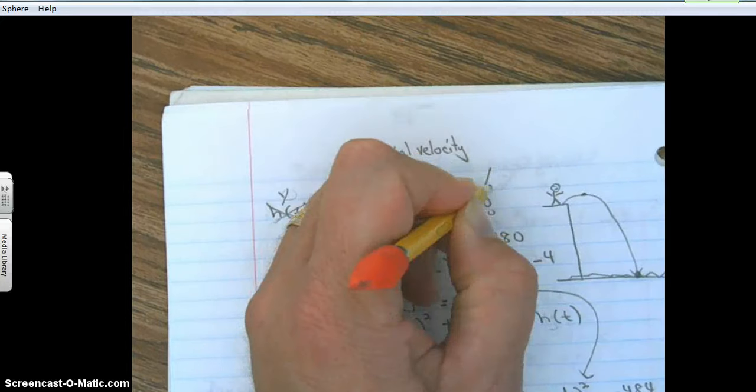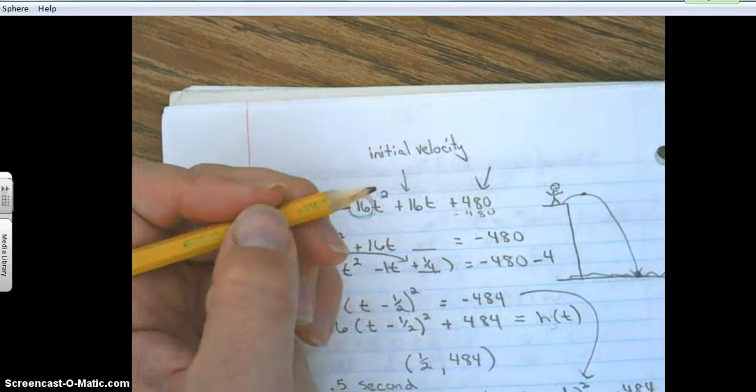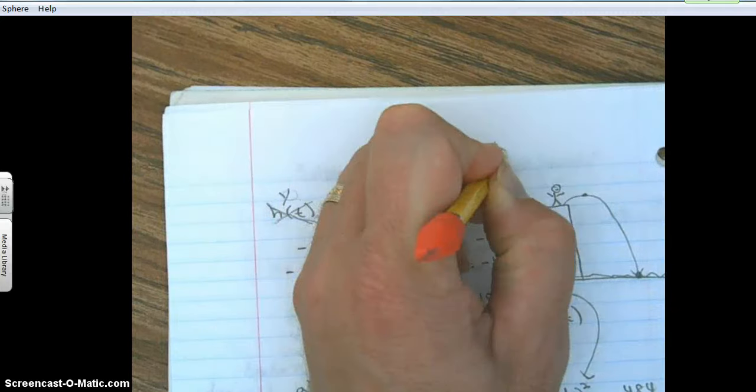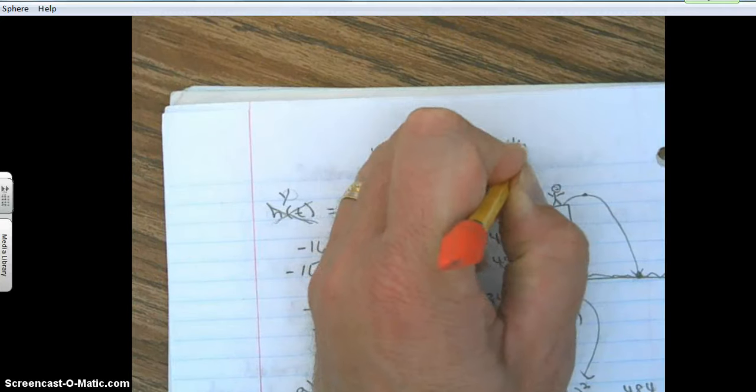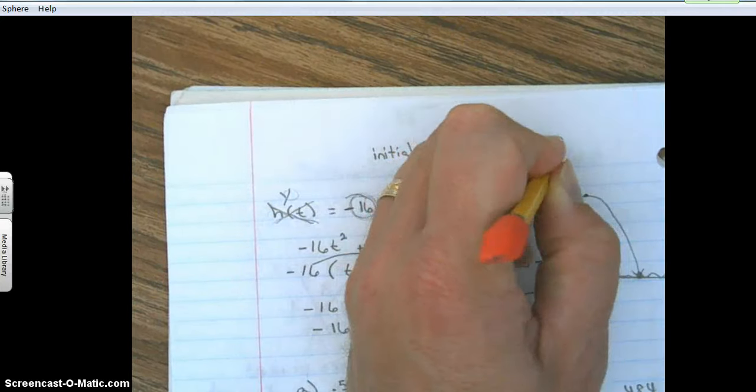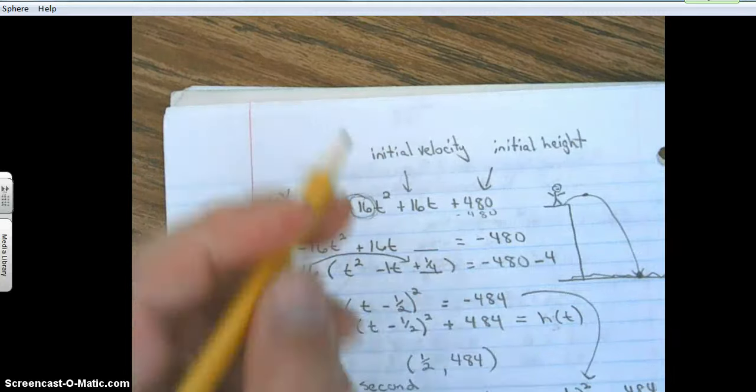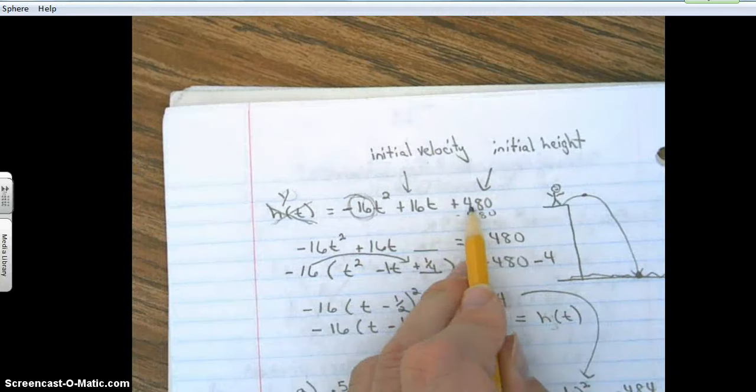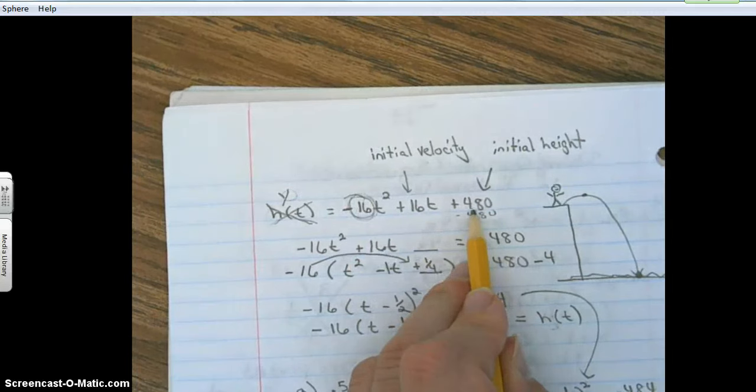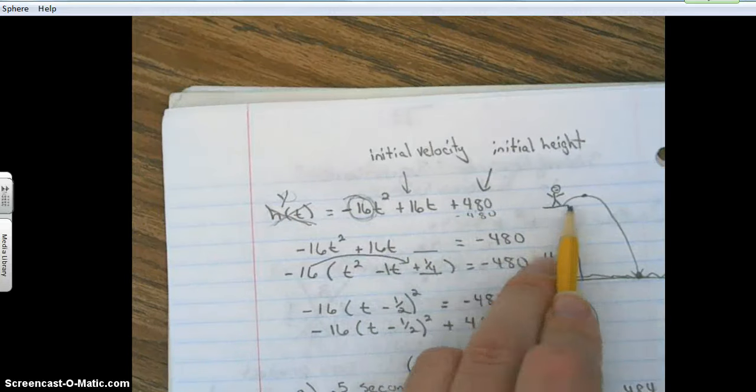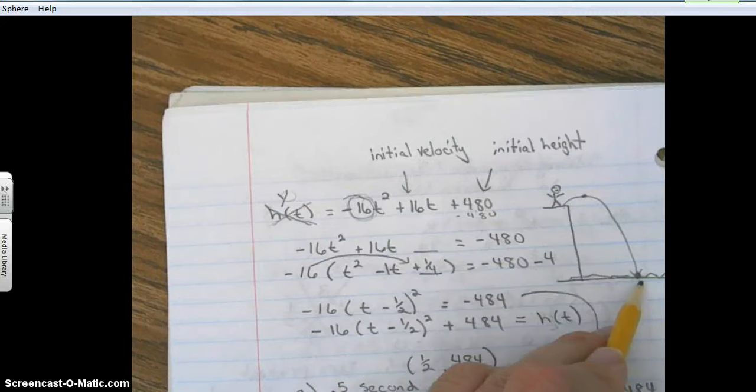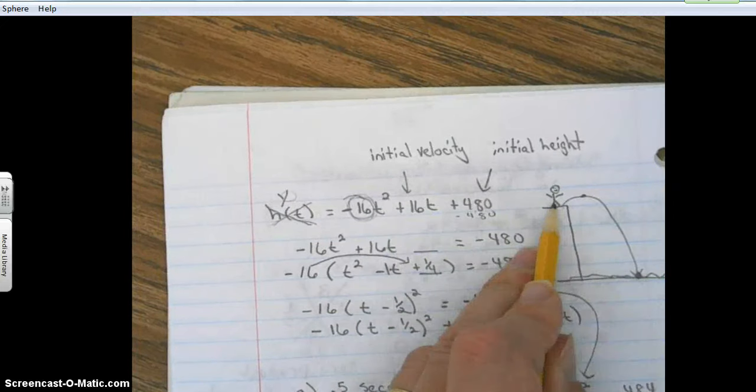And this number right here represents the initial height. So we can know that Jason was 480 feet above the ground when he jumped off the cliff, or above the water I should say. 480 feet.